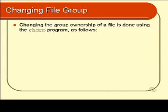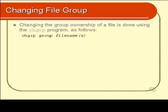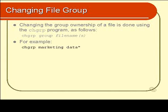The third of the three things we can change in relation to security information is the group. It's also the simplest. We use the program called chgrp. It works just like chown — you simply specify the name of the group that you wish to change it to.